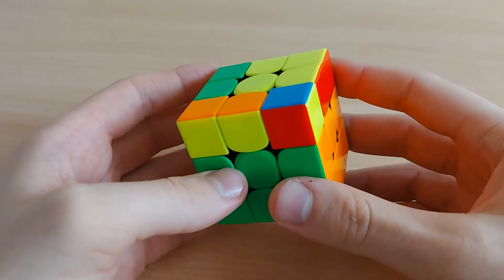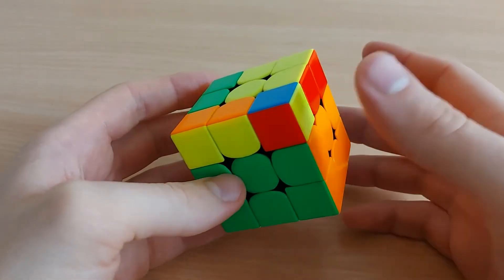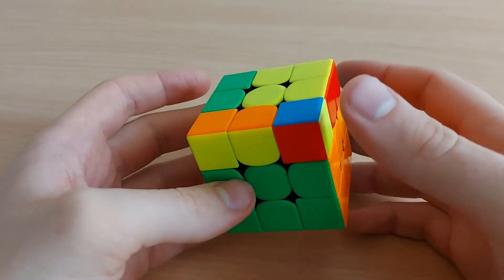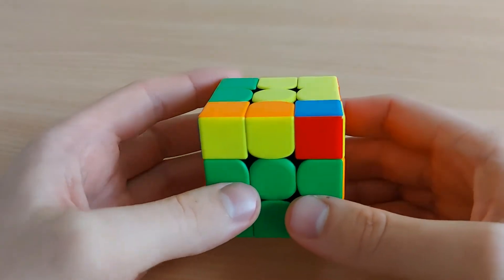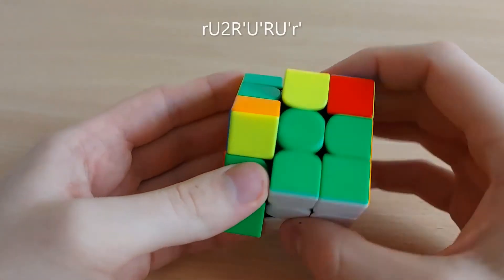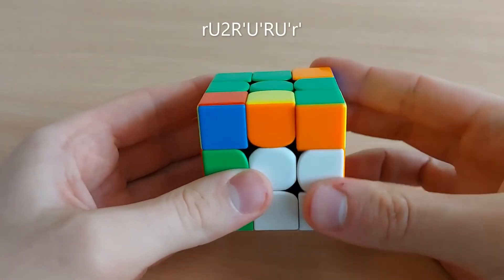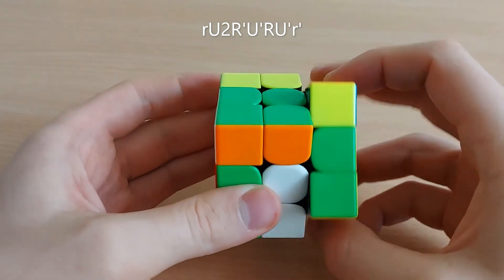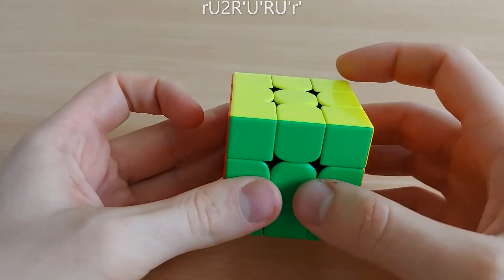So for this one, you do anti-soon with wide R moves in the beginning and in the end of the algorithm. So it goes wide R U2 R prime, U prime R U prime wide R prime.